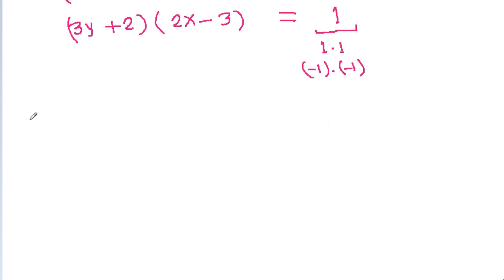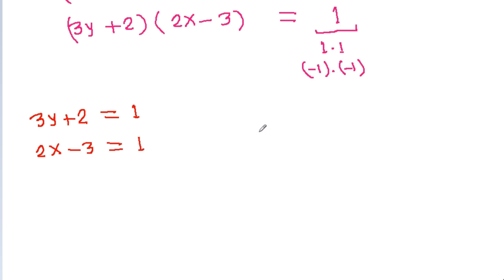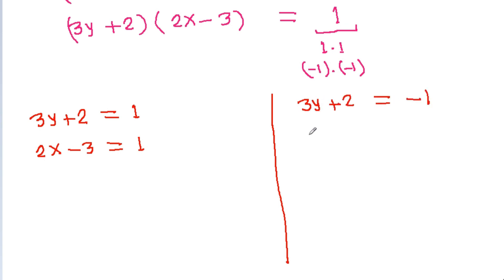Case 1: if 3y + 2 = 1 and 2x - 3 = 1. And Case 2: 3y + 2 = -1 and 2x - 3 = -1.